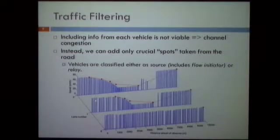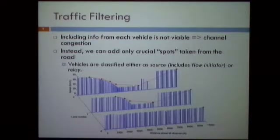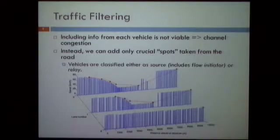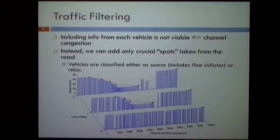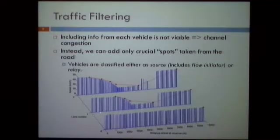We simplify this concept in this figure: we have a road with three lanes and different speed profiles for each lane — a traffic jam here and free flow traffic here. Each blue line represents a vehicle and its speed on the y-axis. The traffic map is first built at the end of the road and then propagated to vehicles behind. Whenever there is something important to be added, it is represented by these red spots, so that vehicles at position zero can have an idea of the speed profile of each lane.